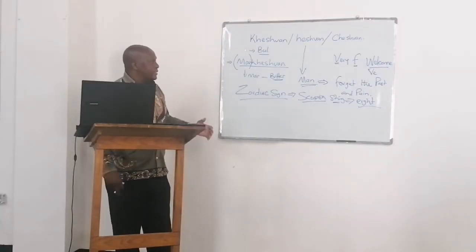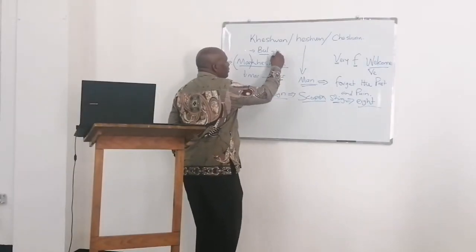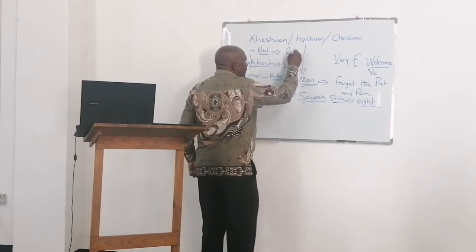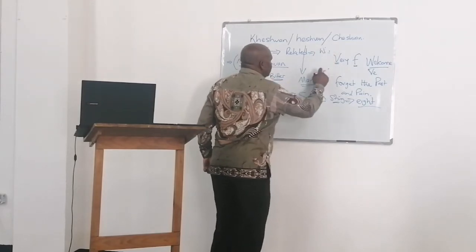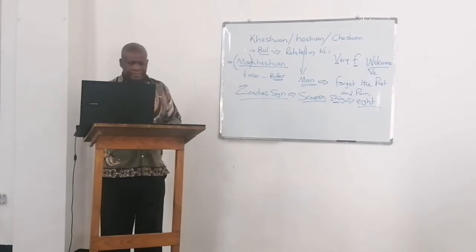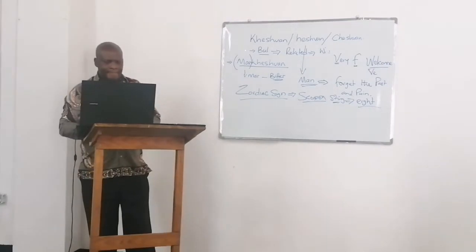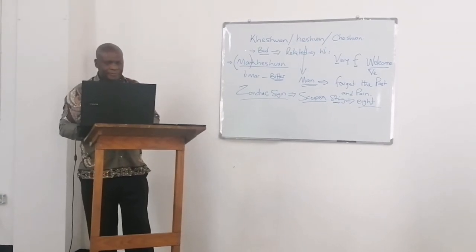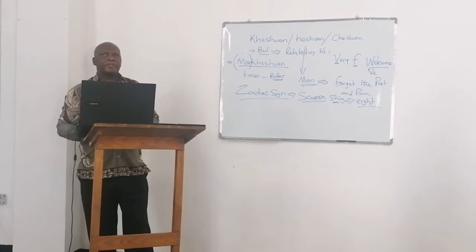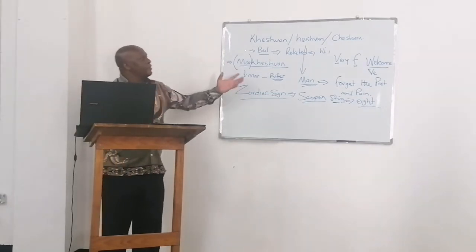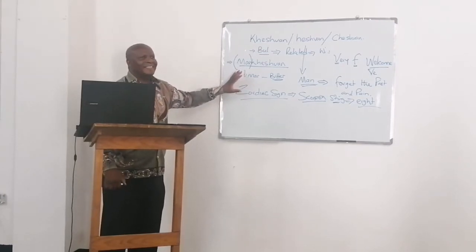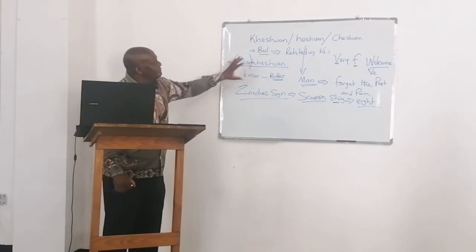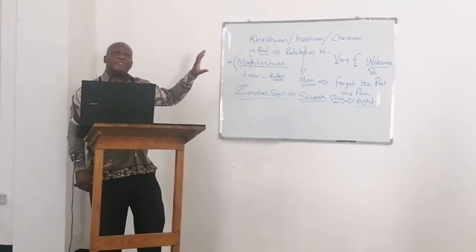You must understand that this word Cheshvan is related to withering. This month has got its own good, bad, and ugly stuff in spite of no holidays. One of the things that happened in this month is that it's a month in which Solomon finished building the temple.